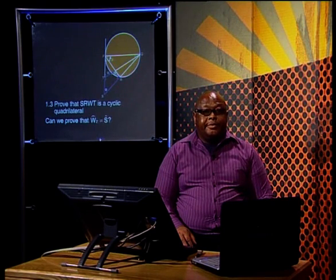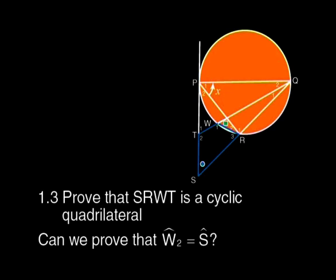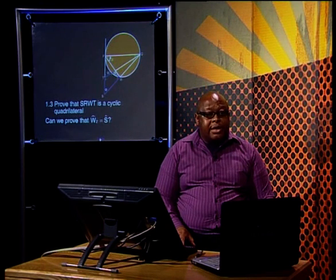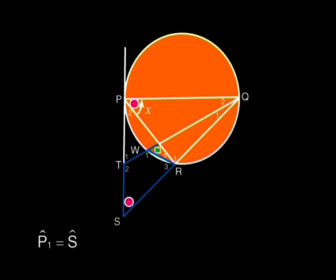Moving on to question 1.3: prove that SRWT is a cyclic quadrilateral. Think about how to prove that a quadrilateral is cyclic. We could prove that the opposite angles are supplementary, but we don't know much about these angles. Or we could prove that an exterior angle is equal to the opposite internal angle. We could try to prove that T1 equals R3, but we haven't worked with these angles in previous questions. It seems we should look at proving that angle W2 equals angle S. What we found in the previous question — that P1 equals S — should be useful.